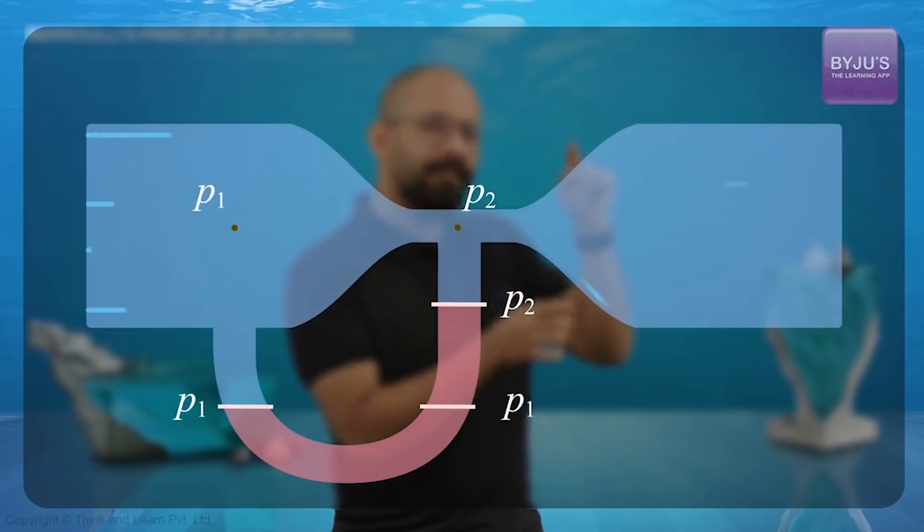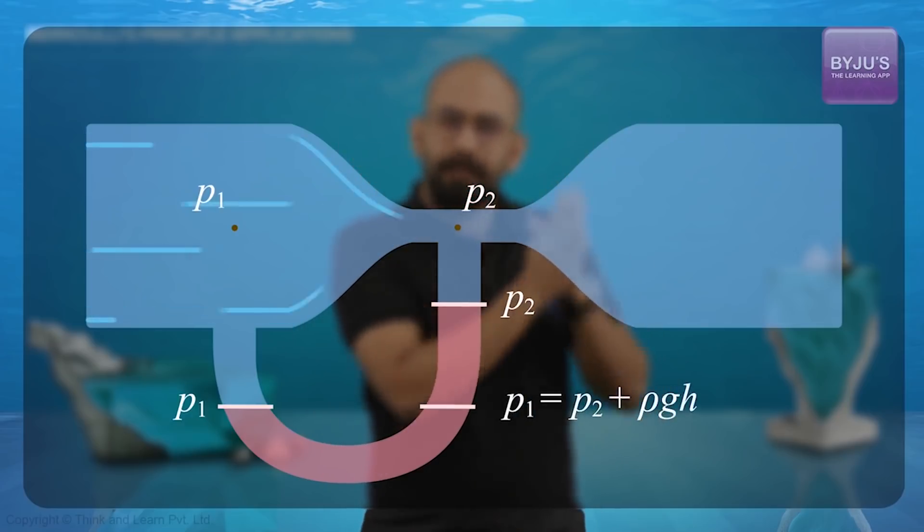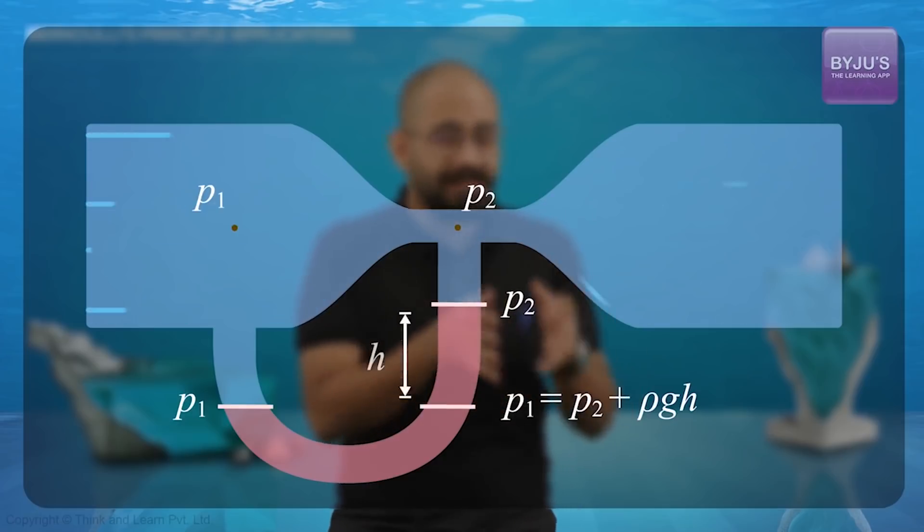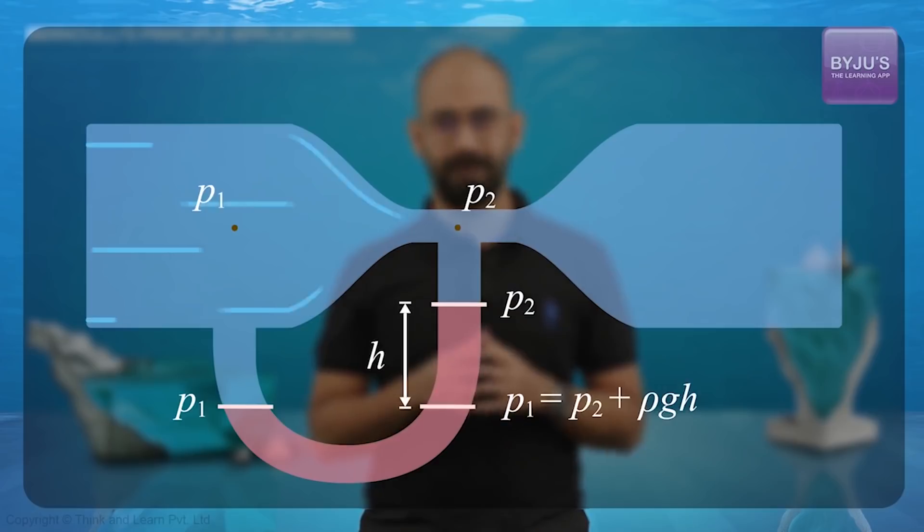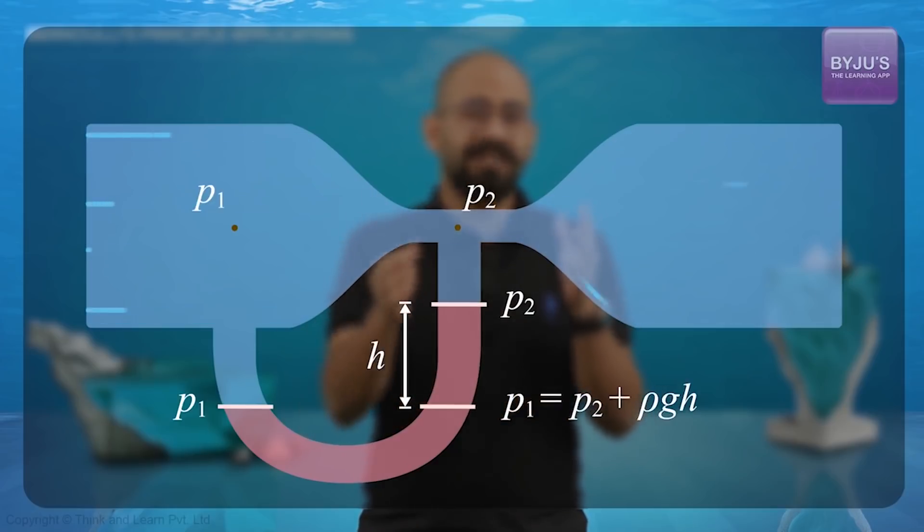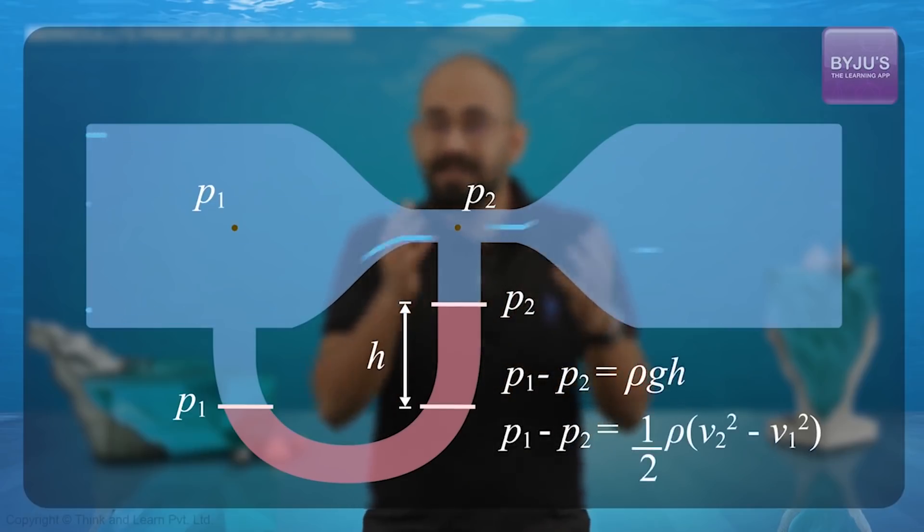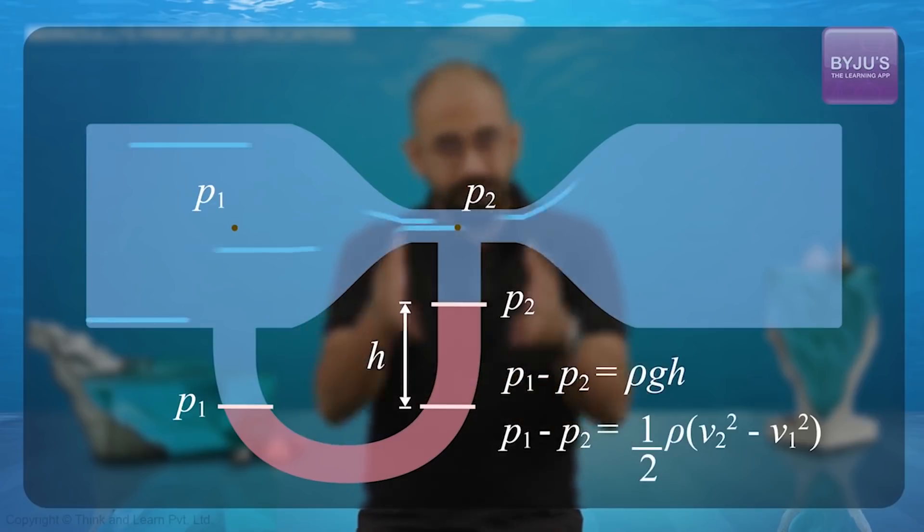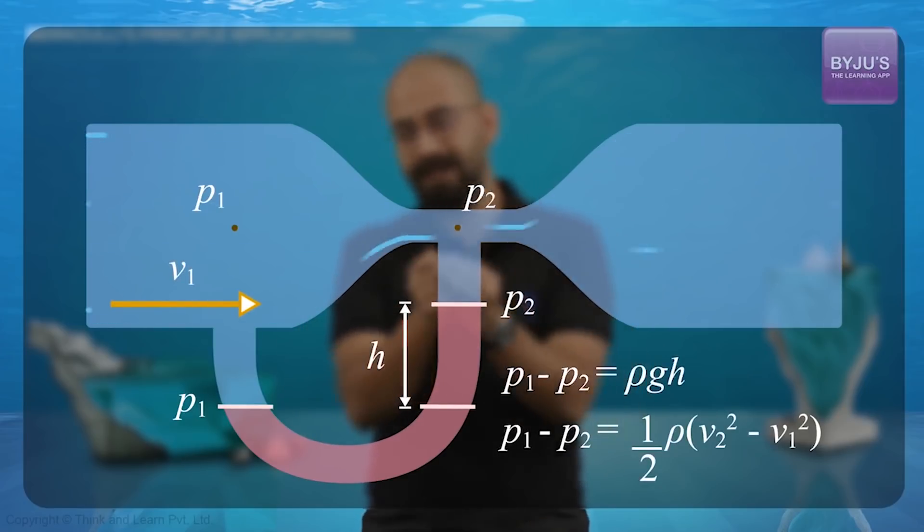Now, what would P1 be equal to over here? P1 will obviously be equal to P2 plus rho g h where h is the difference in the heights of these levels. So, if we measure this h, we can actually measure the pressure difference and therefore, we can measure the difference in speeds as well and using that, we can calculate the speed of the fluid when it enters. Later, we will derive how exactly we can measure the speed of the fluid.